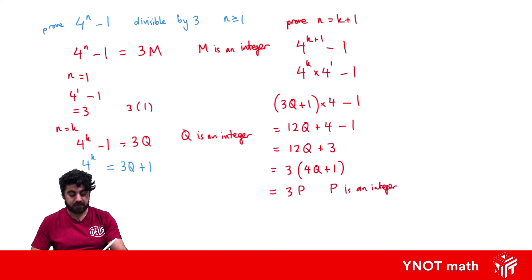And this successfully proves that 4 to the k plus 1 minus 1 is also divisible by 3. And hence the statement is true by mathematical induction.